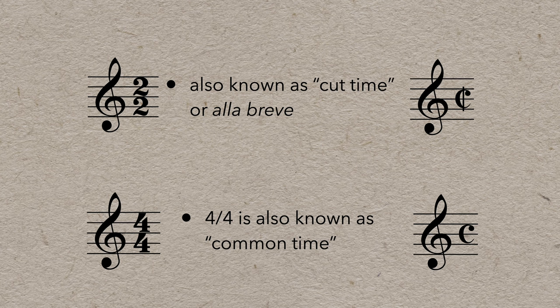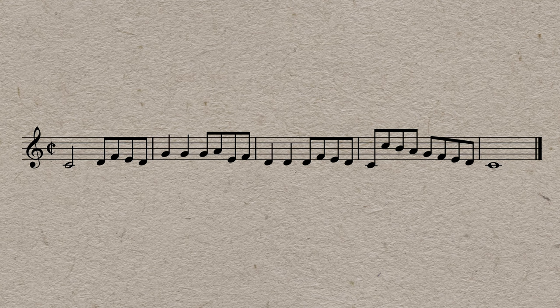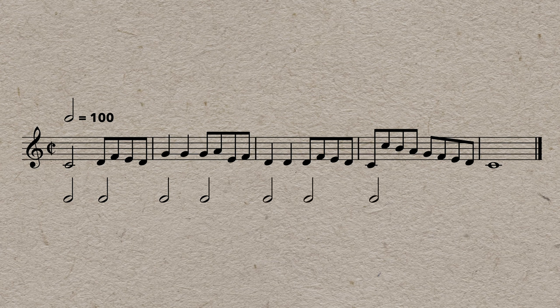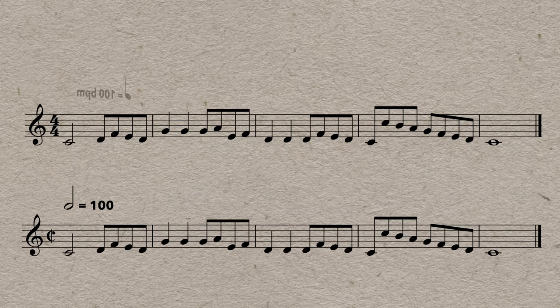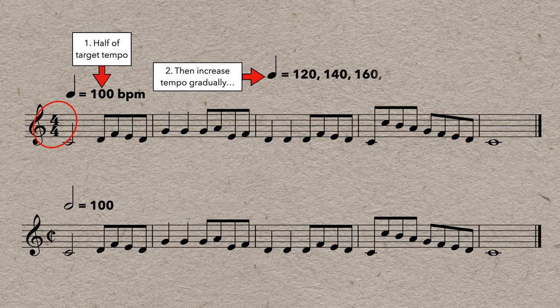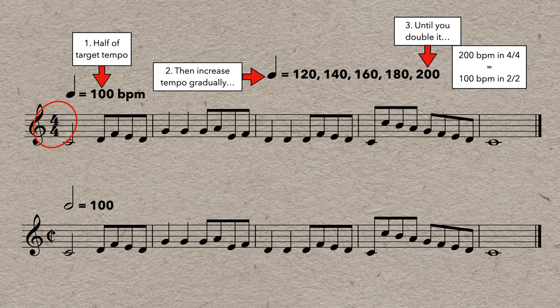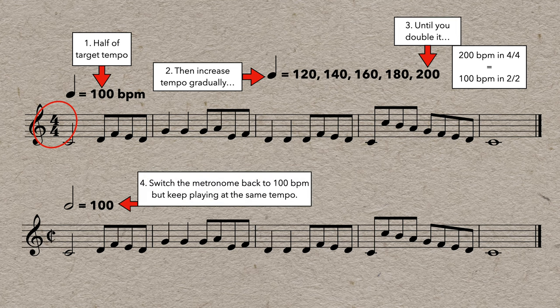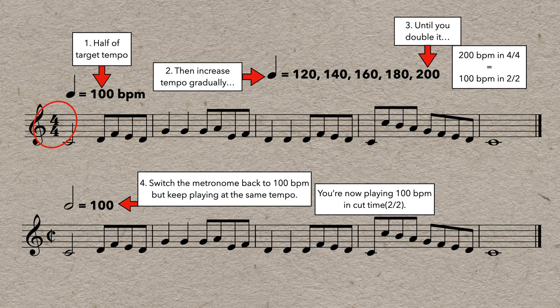These terms and symbols are often used interchangeably. And the fact that cut time looks like common time can be really useful when learning a new piece. If the target tempo is 100 beats per minute in cut time, you can start learning it by practicing it at 100 beats per minute in common time. This automatically cuts the tempo in half. Then you gradually increase the tempo until you double it, because 200 beats per minute in 4-4 is the same as 100 beats per minute in cut time. Then switch the metronome back to 100 beats per minute, but keep playing the same tempo. And now you're playing 100 beats per minute in 2-2 time.